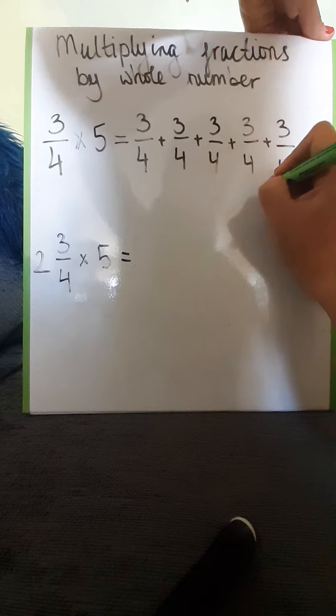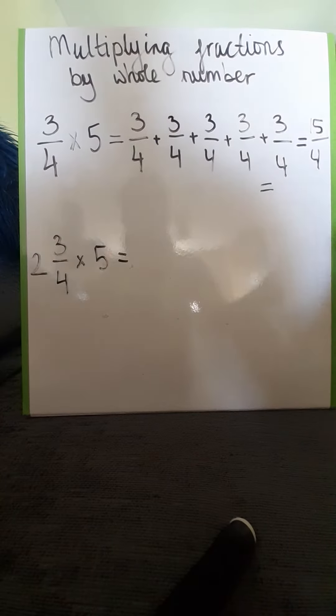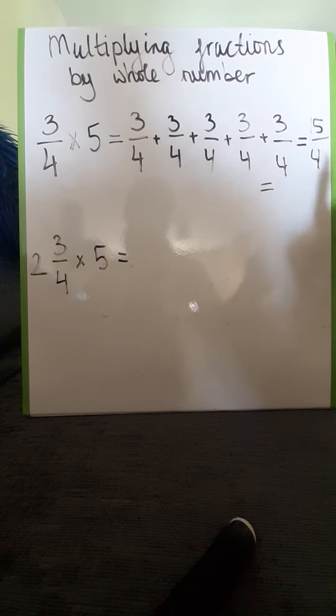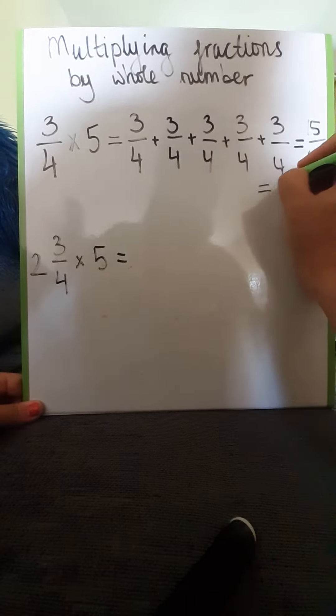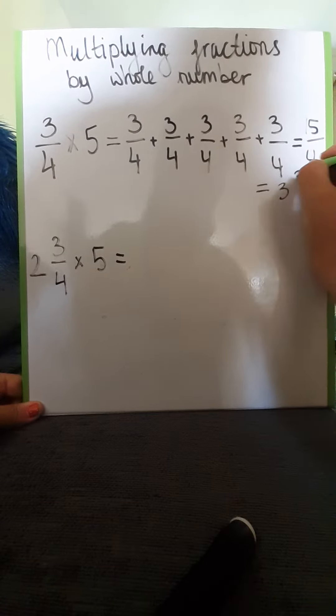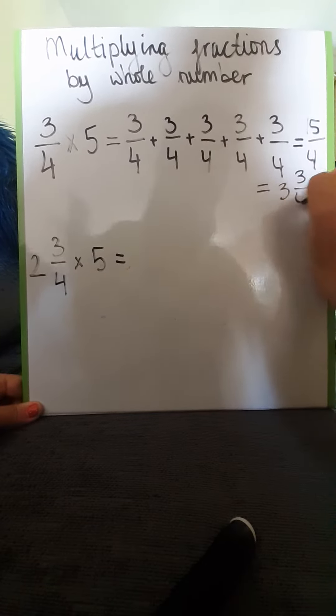I can then simplify that, so I could write that as a mixed number. So I've got to ask myself how many times does 4 go inside 15. I know that it is 3 times with a remainder of 3 quarters.